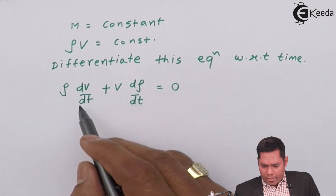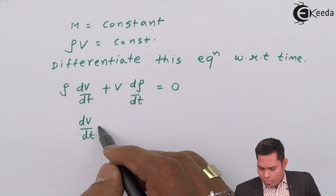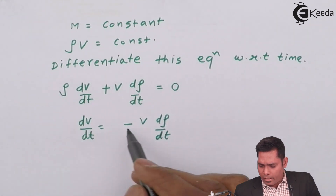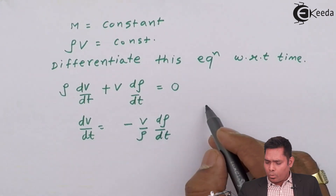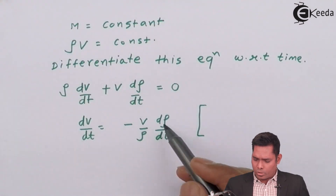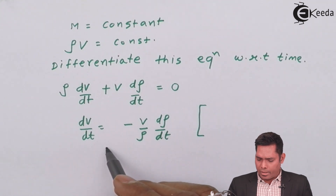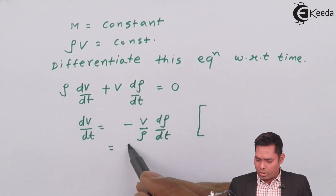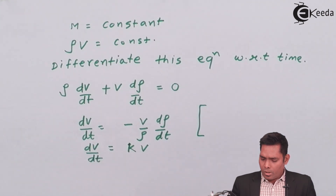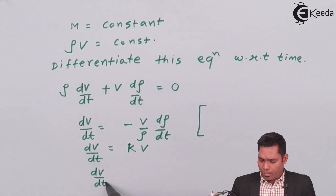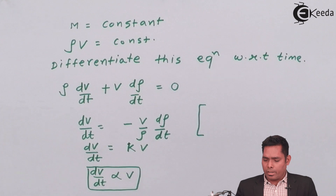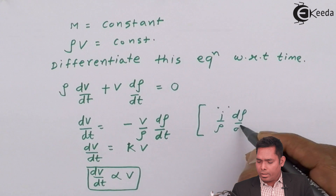Rearranging: dV/dt = −(V/ρ)(dρ/dt). Now, (1/ρ)(dρ/dt) is given as a constant, so dV/dt equals some constant times V. This means dV/dt is proportional to V.